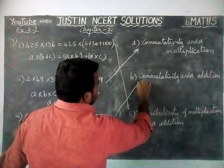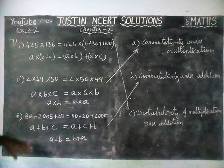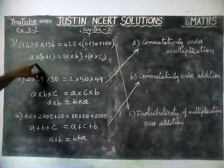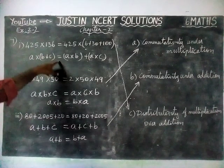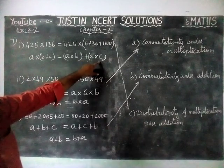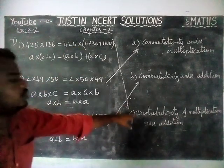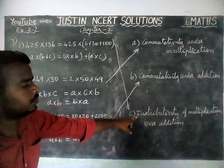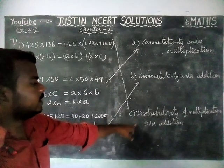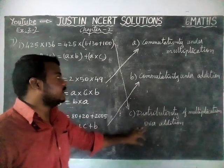For the third question, option B is the correct answer. Now I am repeating: A into (B plus C) is equal to A into B plus A into C. This is distributivity of multiplication over addition.